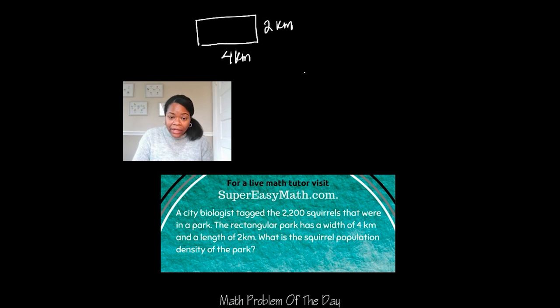Well, I need to find the area of the park first and I know area equals length times width. So this is four times two and so that's eight. We can't forget our unit, so that's kilometer squared.